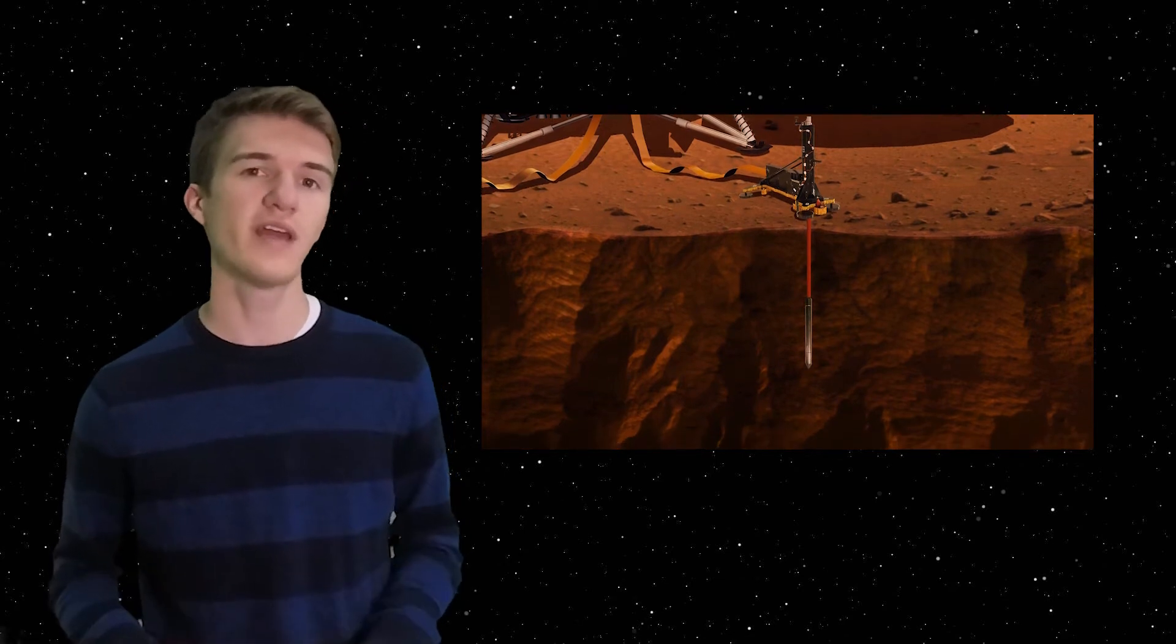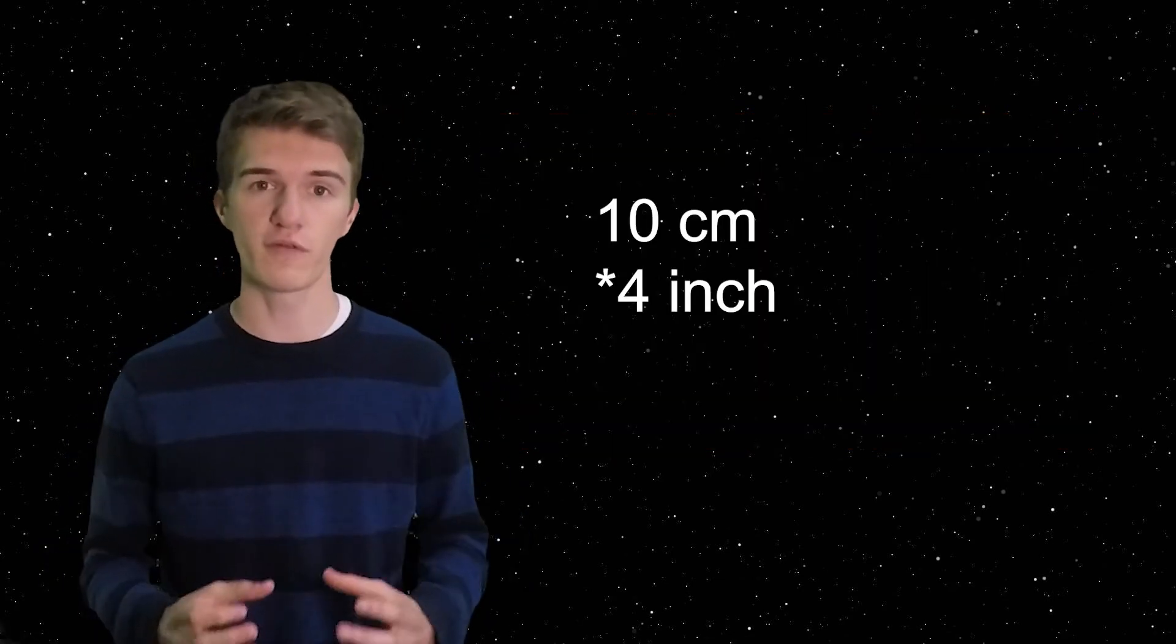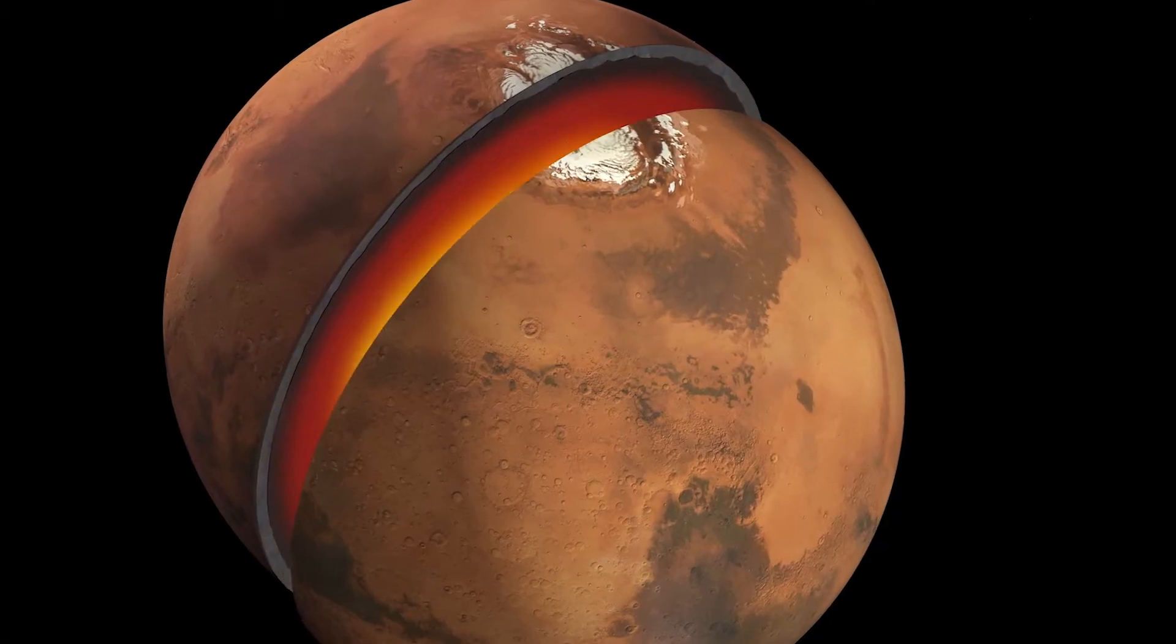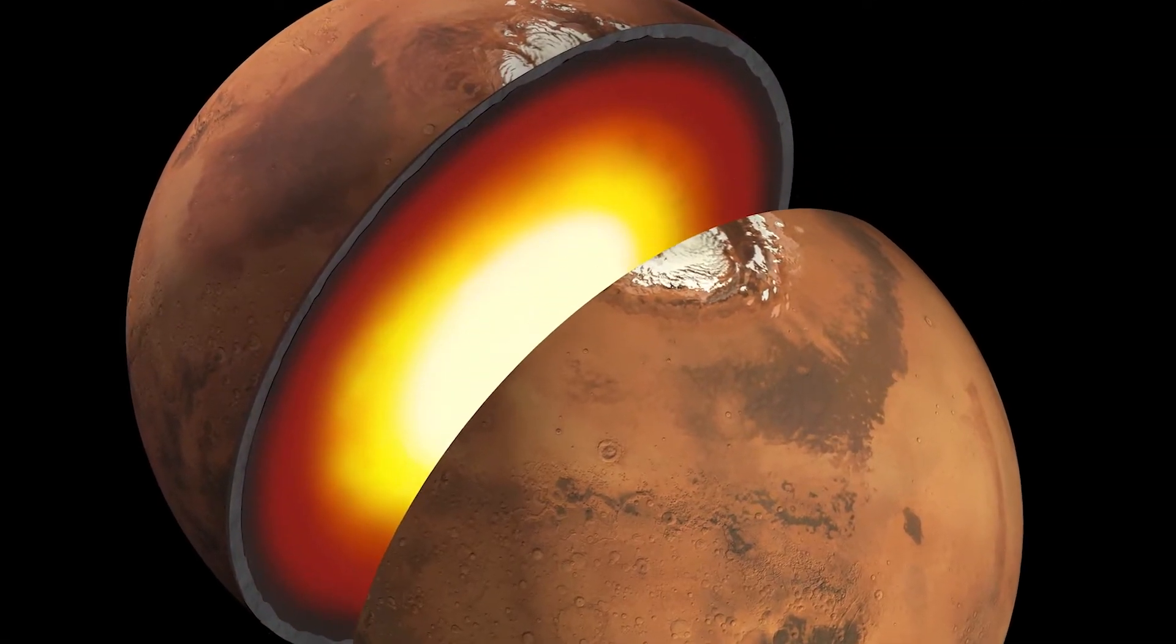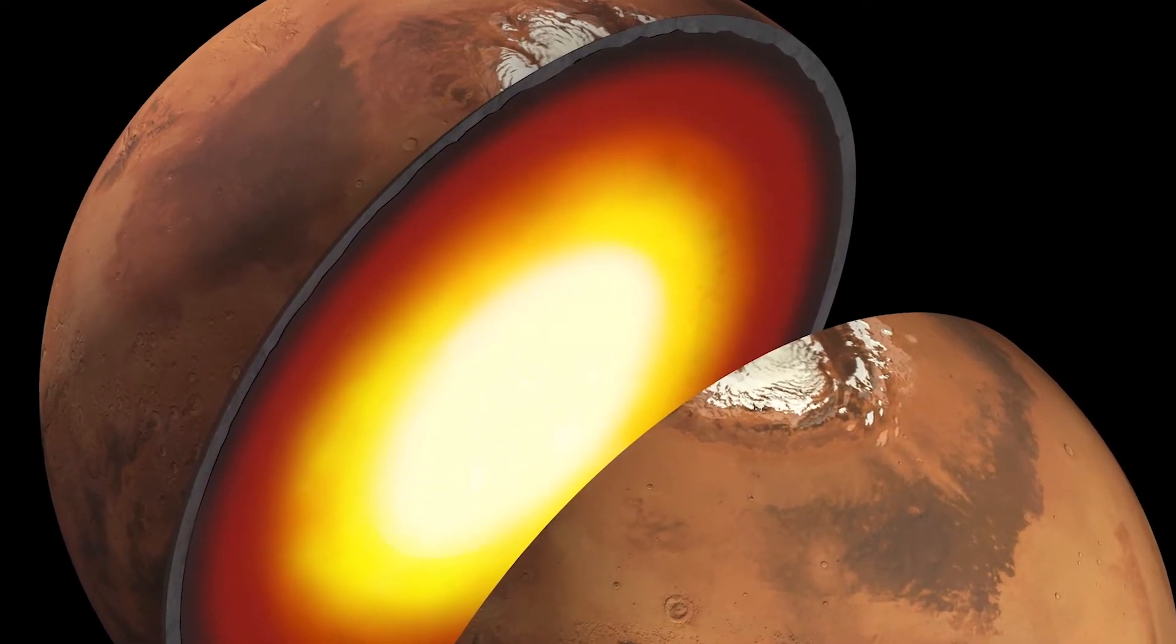So once it goes all the way down, there will be sensors every 10 centimeters that are going to measure the temperature of the probe, or the gradient, all the way down from 5 meters down to the surface. This is going to give a rough estimate about how much heat is actually flowing through the crust of Mars, which will give us more information about how much heat is actually exhausted out of Mars's inner core.